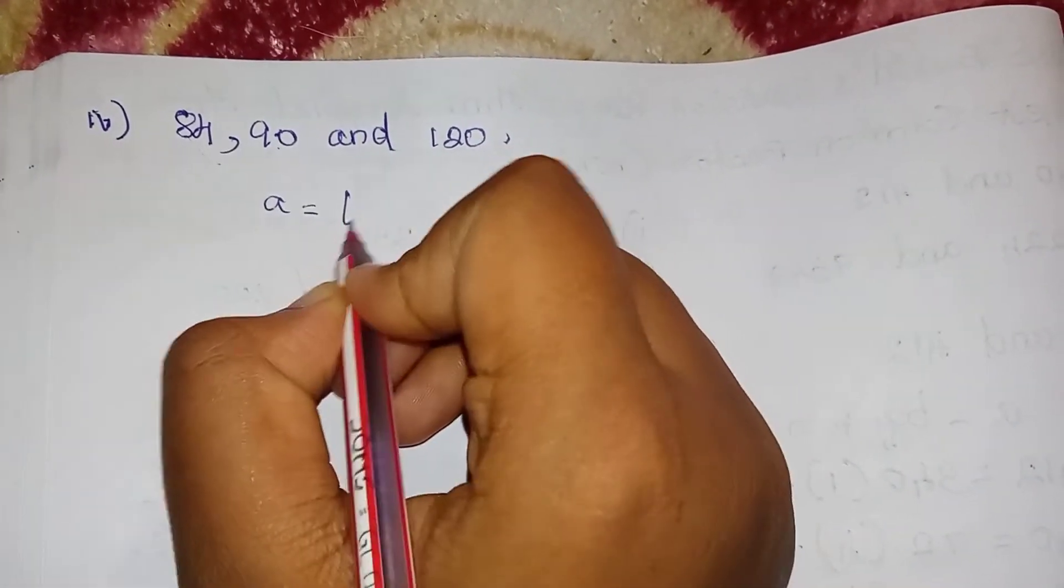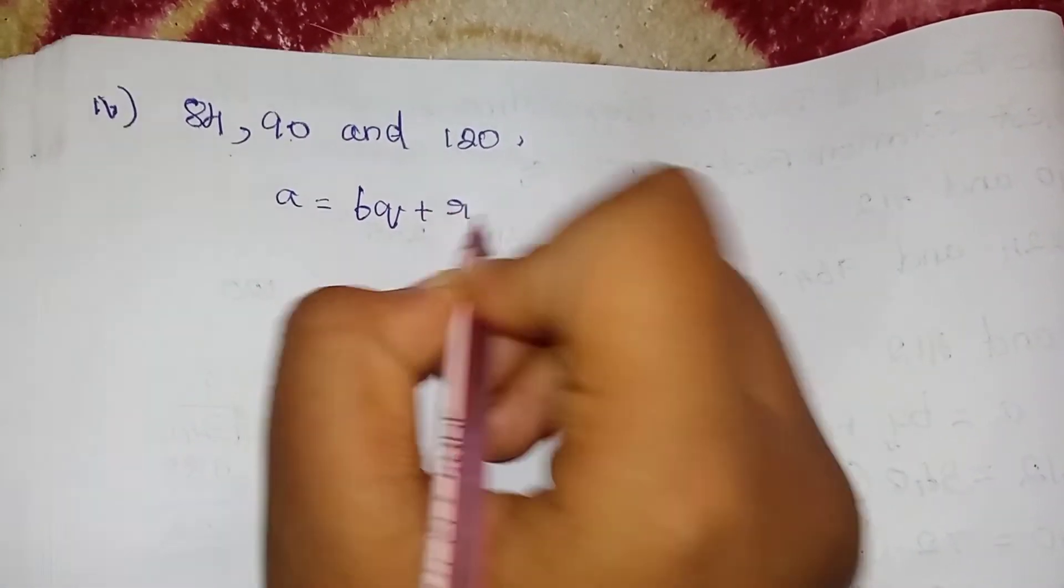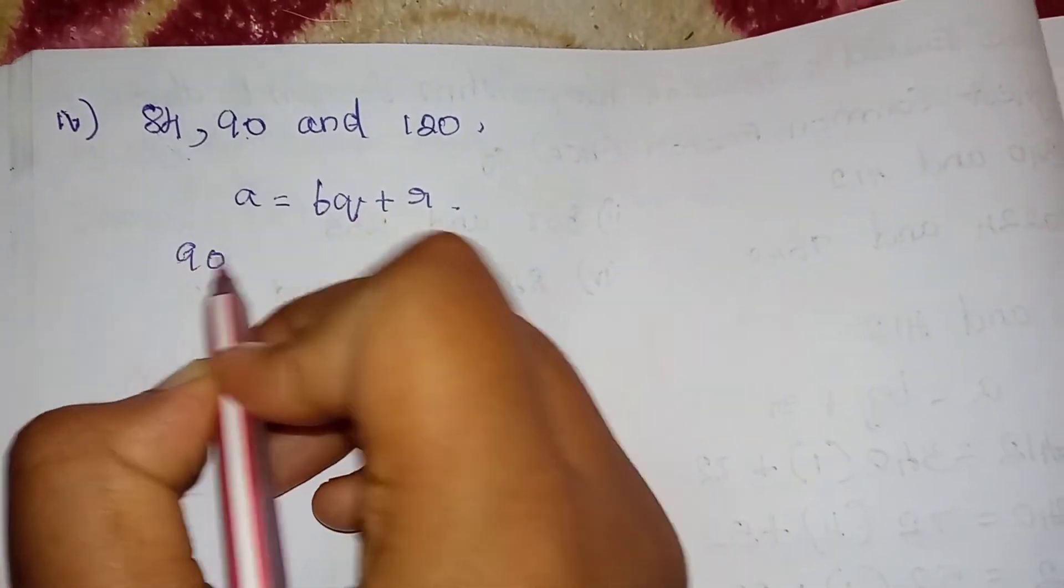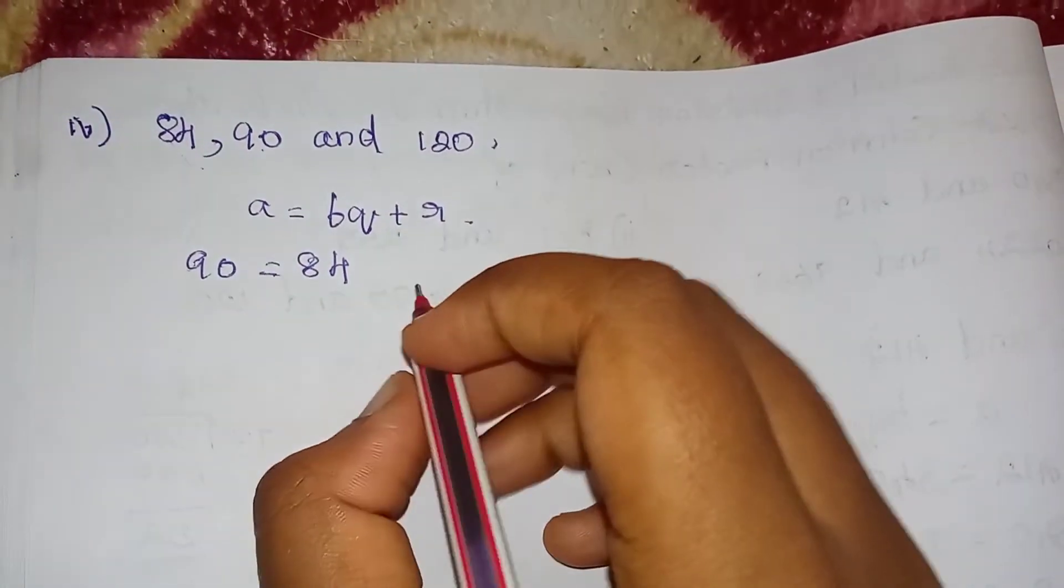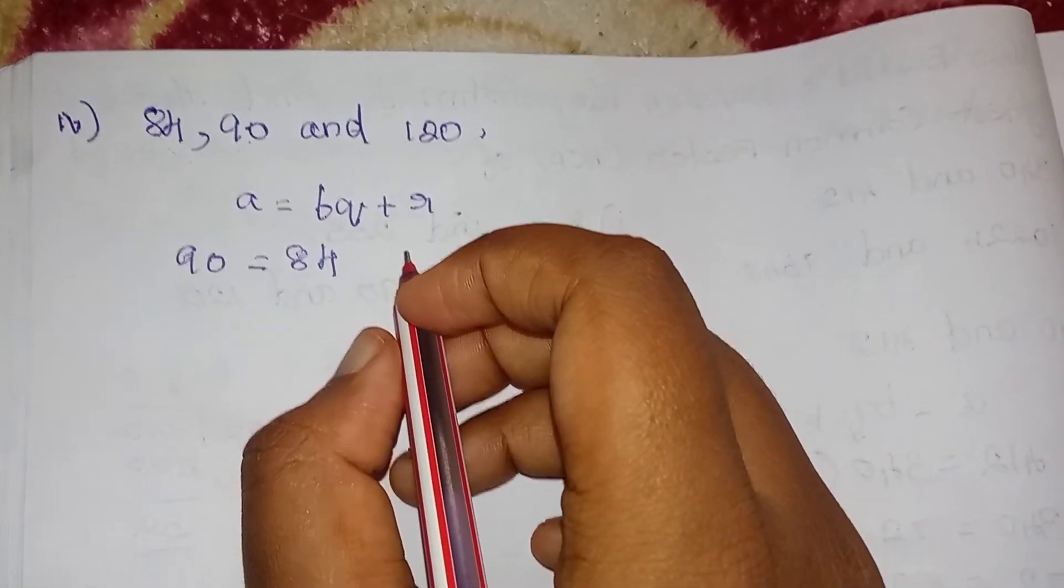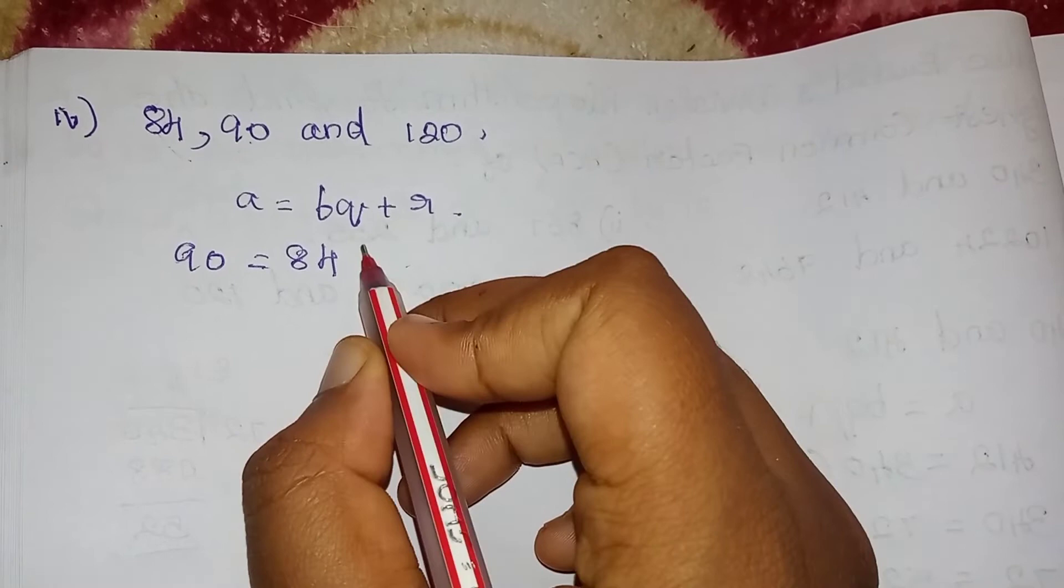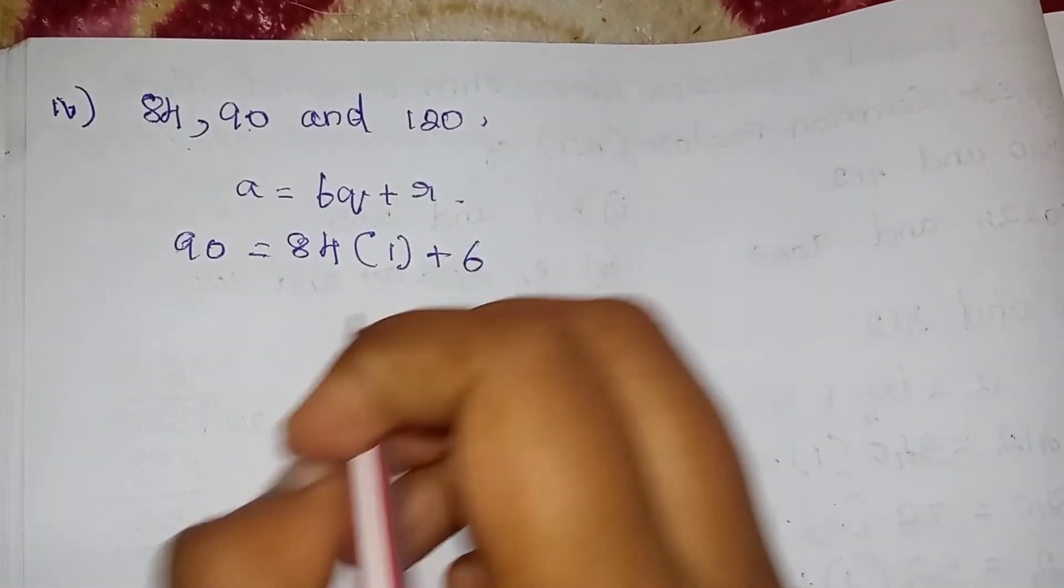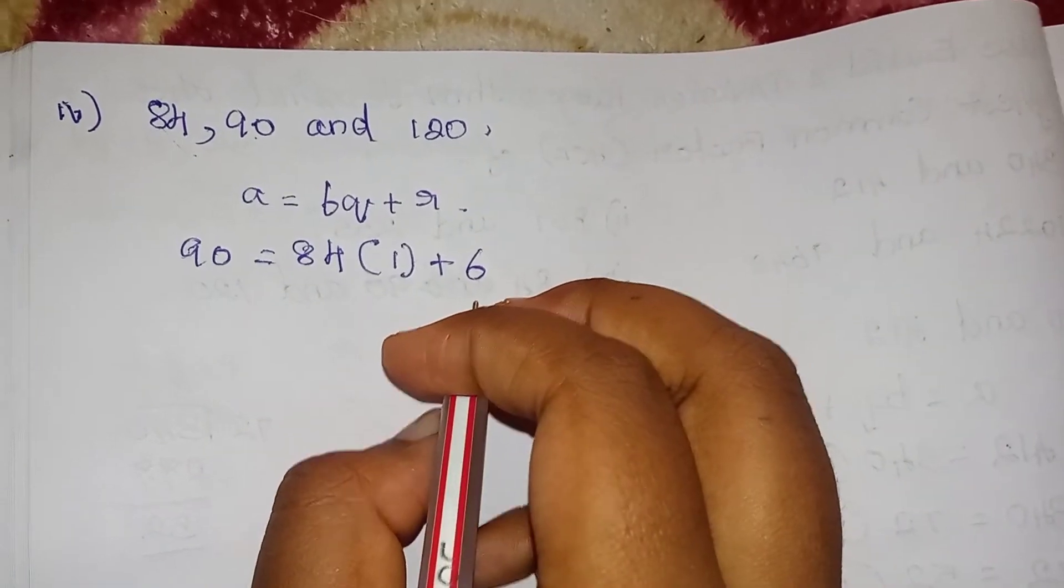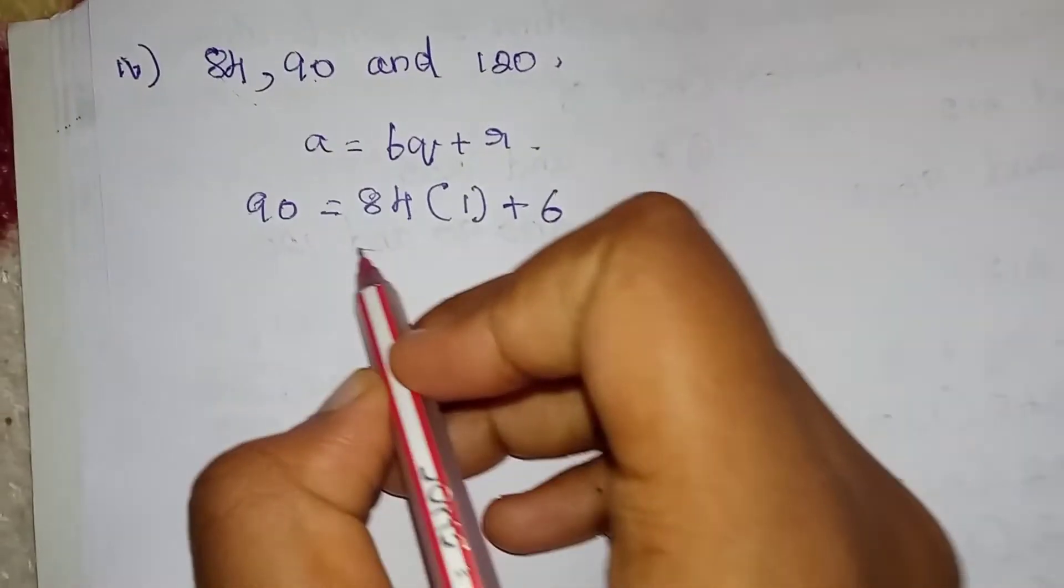A is equal to bq plus r. A is 90, b is 84. Divisor is 84. Quotient is 1, remainder is 6.